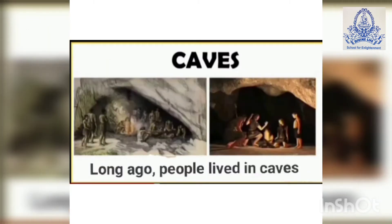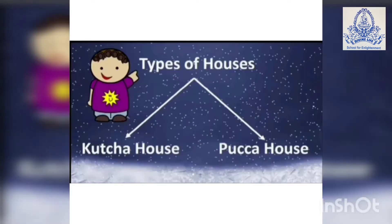Long ago, people lived in caves. Later, they learned to build houses. Types of houses: there are two types of houses — kaccha house and pakka house.